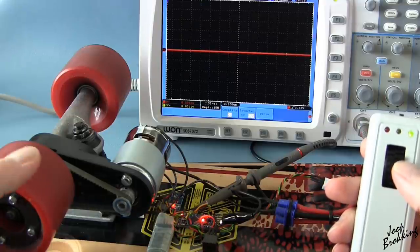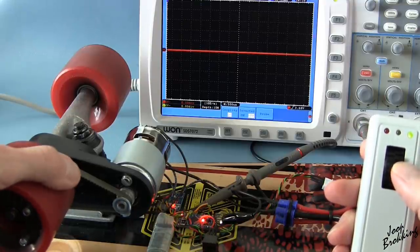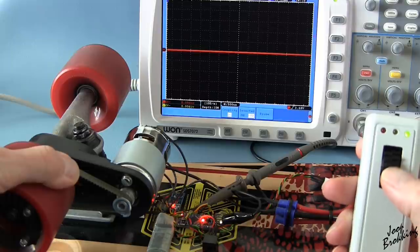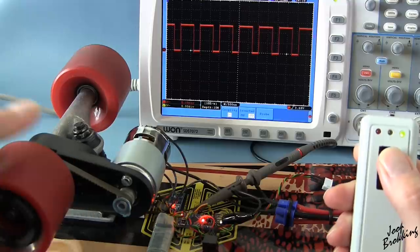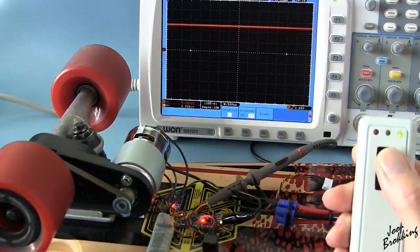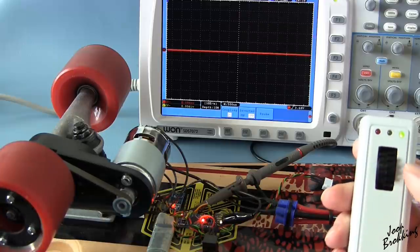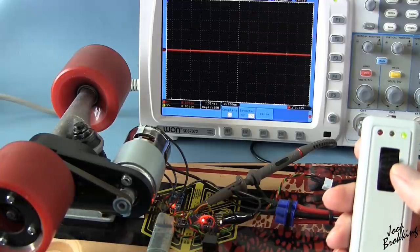If I stall the motor and give full throttle, you can see that the duty cycle of the pulse width modulator is increasing up to the point it reaches 8 amps. When I release the wheel, the current drops and the duty cycle of the pulse width modulator increases to 100%.